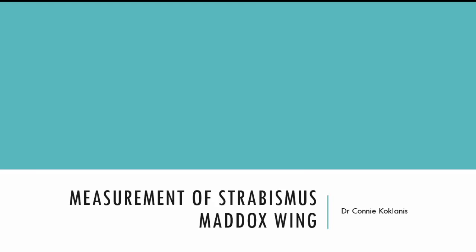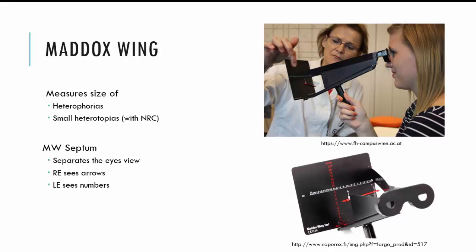Hi, my name is Claudia for Climbers and you're watching the video on measurement of strabismus using the Maddox wing. The Maddox wing is an instrument we can use to measure the size of the deviation. However, it is limited in terms of the type of strabismus we can measure and generally it's used for heterophorias and small manifest deviations.